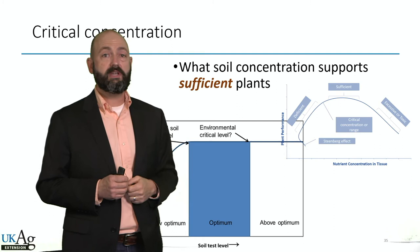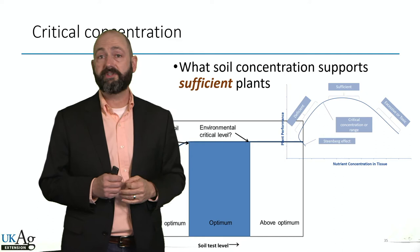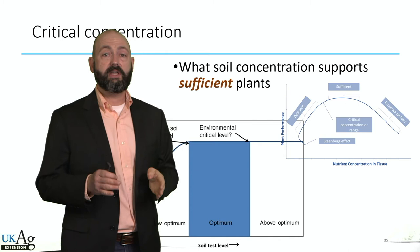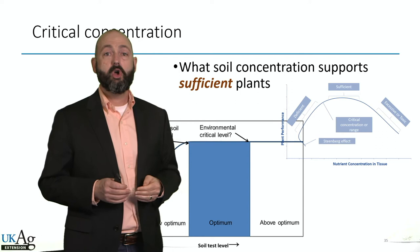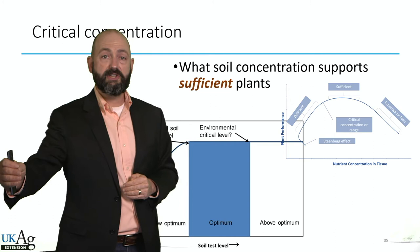That sufficiency is based on nutrient concentration in the tissue and plant performance. But now we're a step removed from that, and we're using a soil concentration of that nutrient to predict plant performance — that yield on the vertical axis. Now we're looking at soil test versus yield performance with and without fertilizer.